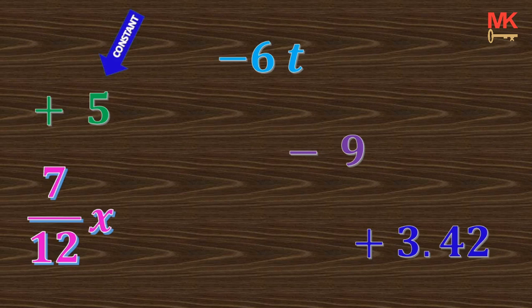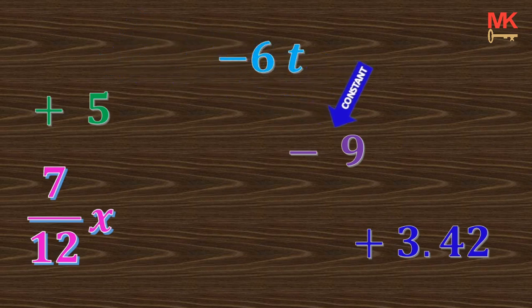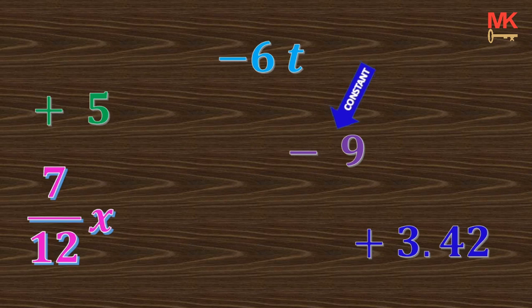Similarly, negative 9 is a constant term because there is no letter attached to it. And finally, positive 3.42 is also a constant term.